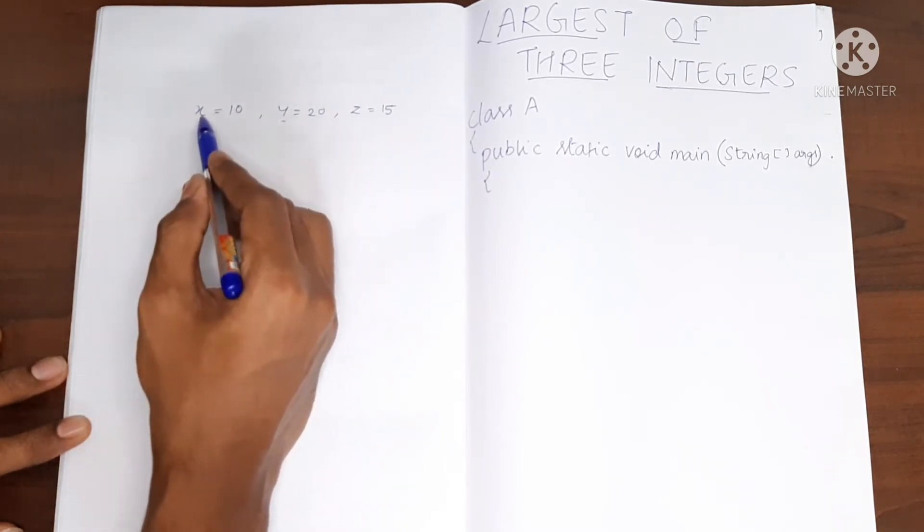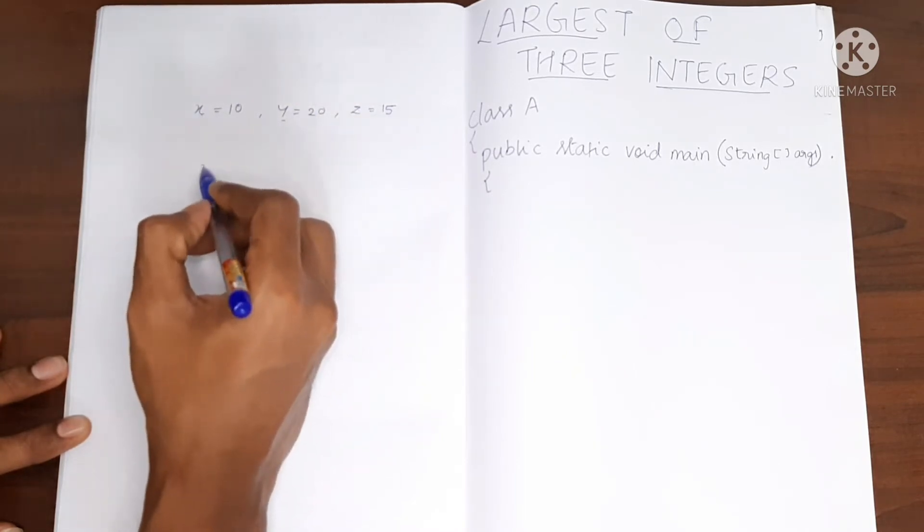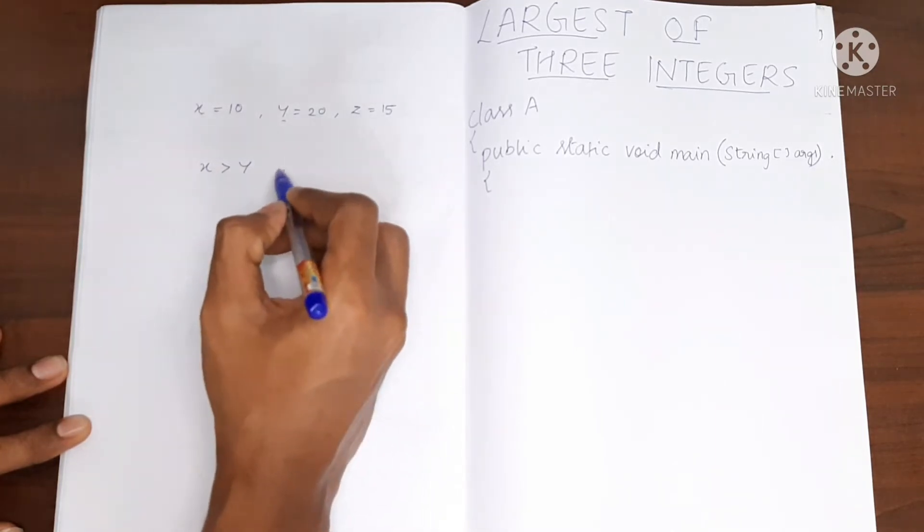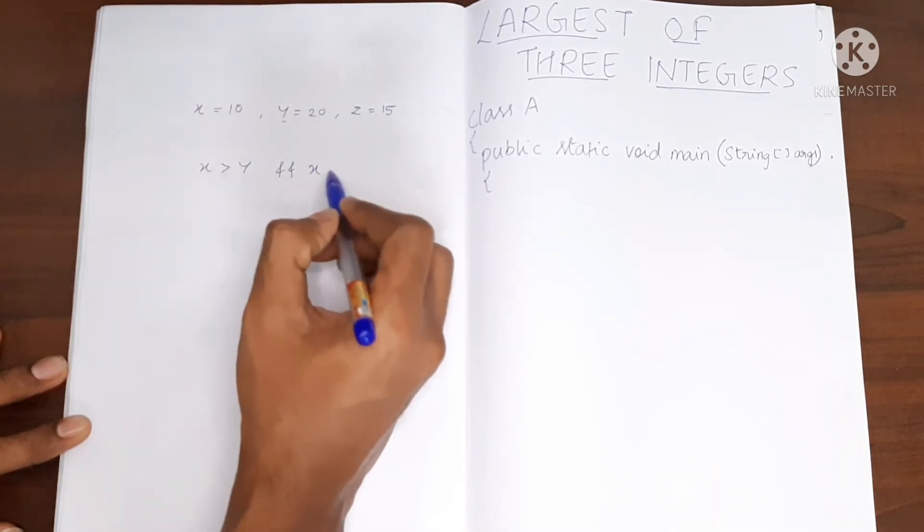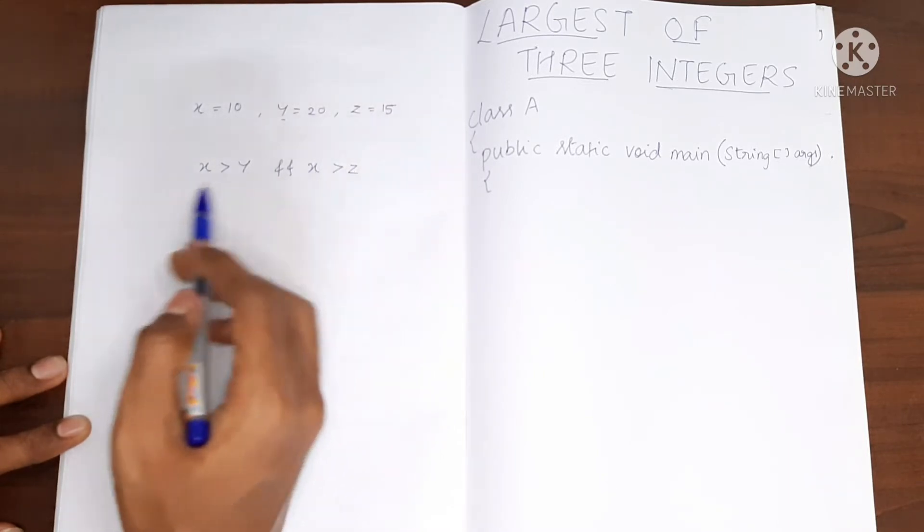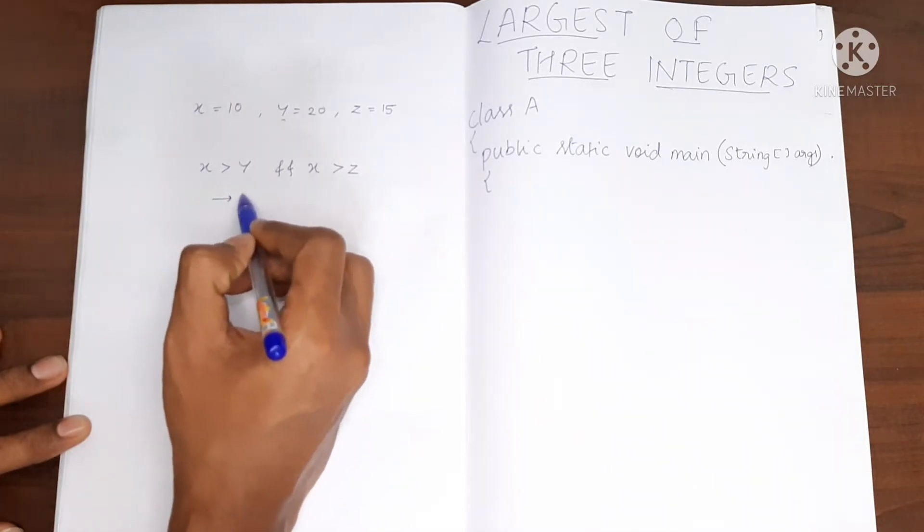We will check x with y and x with z. I will say if x is greater than y and also x is greater than z, then we will say the greatest value is x. This is the if condition.